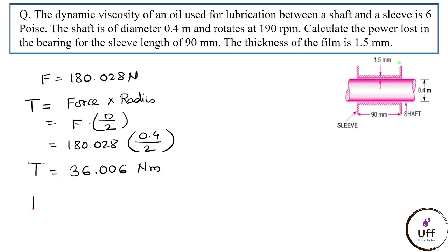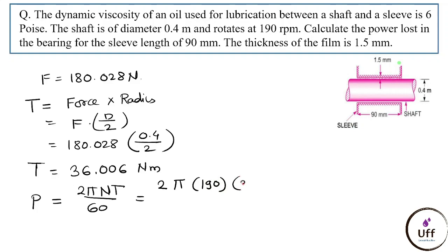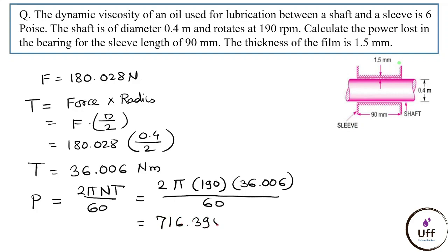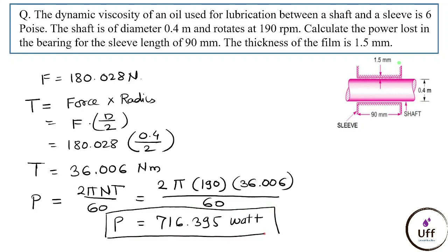Power lost = 2πNT/60 = 2 × π × 190 × 36.006 / 60 = 716.395 W. Always use SI units to get the correct final unit. This is our final answer.